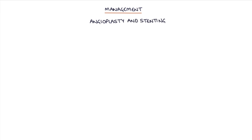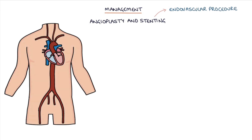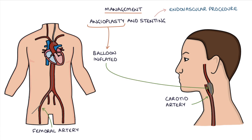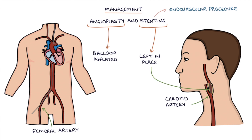Angioplasty and stenting is an alternative to endarterectomy. This is an endovascular procedure which involves a catheter inserted into the femoral artery in the groin, passed through the aorta under x-ray guidance and up to the affected carotid artery. A balloon is inflated in the narrowed area to widen the lumen of the artery — this is called angioplasty — and then a stent is left in place to keep the artery open, and this is called stenting.